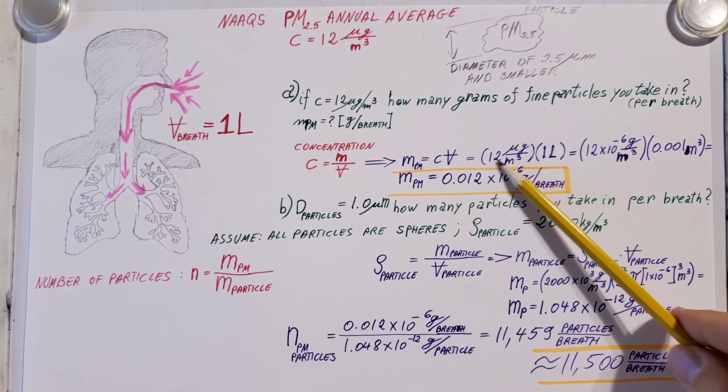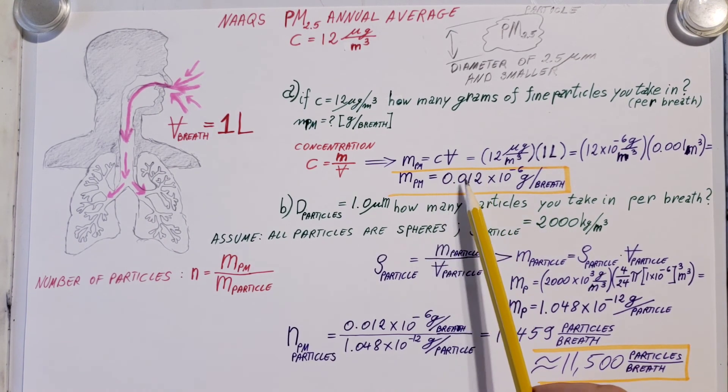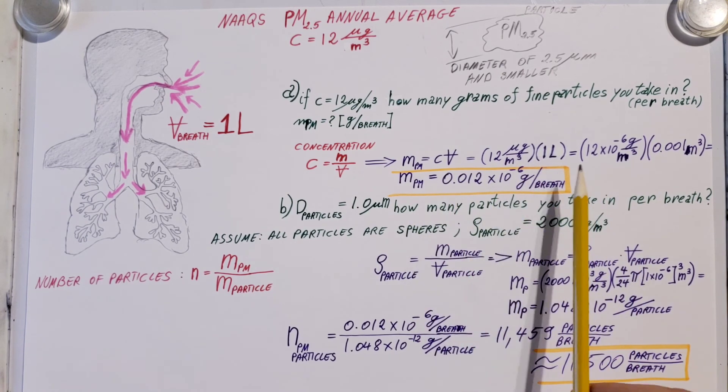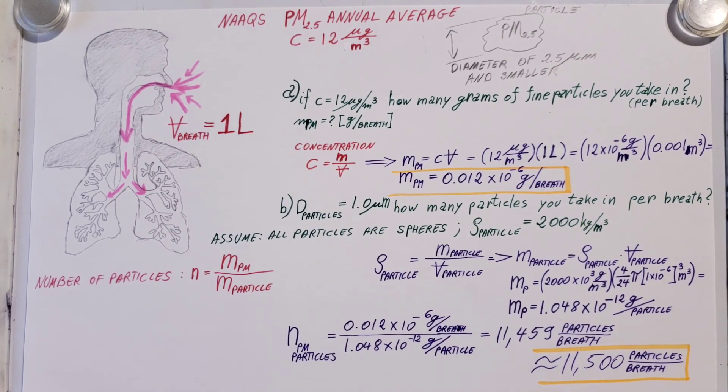Now if we take a look at these two numbers, this is a really small number and this is a fairly large number. If you're reading an article or some kind of report, it's important to keep in mind what kind of unit they're reporting. For example, an industry would love to report this number: 'Oh, we are only polluting 0.012 times 10 to the negative 6 grams'—very small number. But at the same time, an environmental organization would more likely like to report this number: 'We found 11,500 particles per breath.' Each of them could pick a side which looks more in their favor of what they want to talk about. So keep in mind they might sound different, but it's actually the same thing.